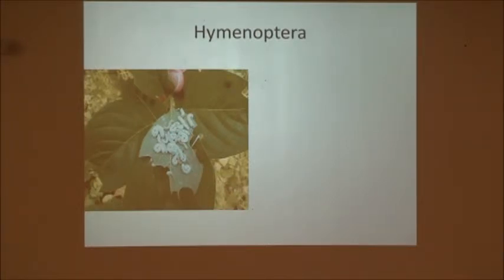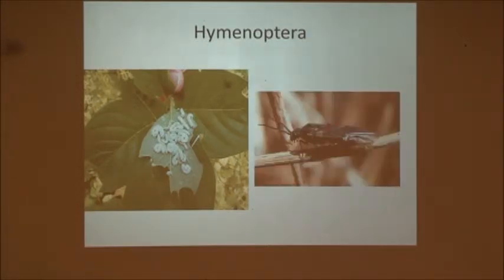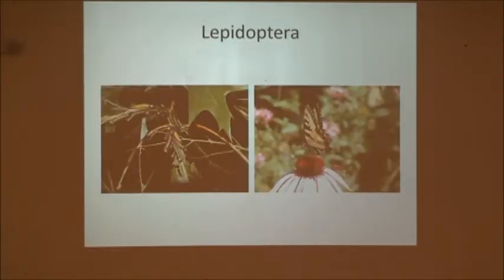These sawflies are on the back of the leaf — you can just flip the leaf over and they're stuck on it. They don't actually have a web that they stay in, and they are super damaging. There's a picture of the adult, but again it's the larva stage that is really damaging.